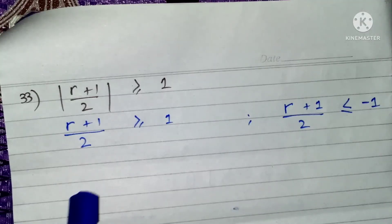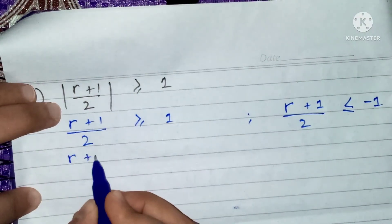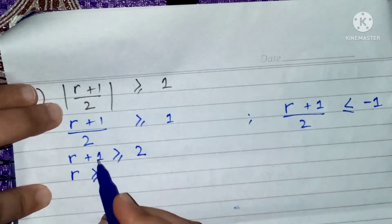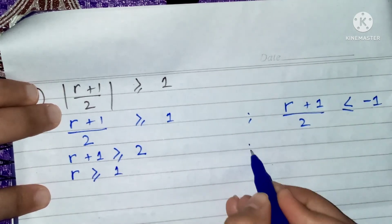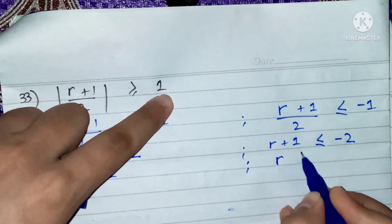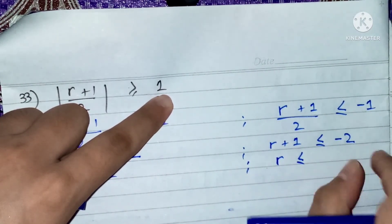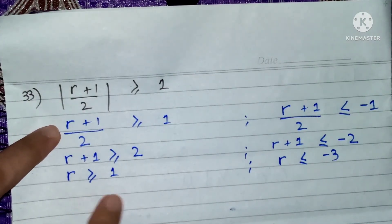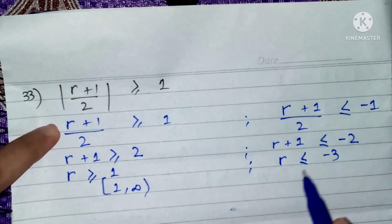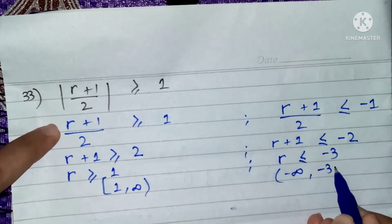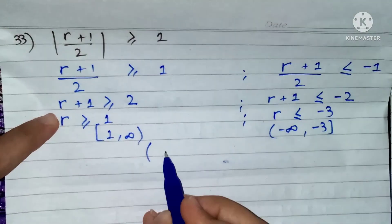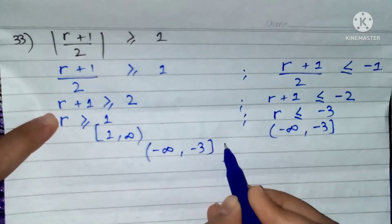Question number 33. I have opened the mod. Solving: r plus 1 greater than equal to 2 times 1, so r greater than equal to 2 minus 1, giving r greater than equal to 1. And r plus 1 less than equal to 2 times minus 1, so r less than equal to minus 2 minus 1, giving r less than equal to minus 3. The union of intervals is: (minus infinity, minus 3] union [1, infinity). Plot the number line yourself.